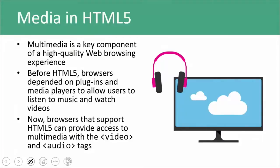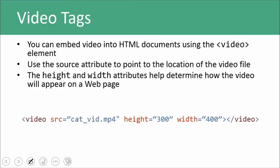Honestly, I'm the same way too. One thing that's really important to note about media and HTML5 is that prior to HTML5, browsers depended on plugins or media players in order to allow us to watch content on screen. But now we can actually embed video and audio onto a web page using the video and audio tags. You can embed video in a very simple way using the video tag. We point to the source — maybe a cat video — and define the height and width attributes to make sure the video renders properly on screen. Otherwise it just renders in its natural state. Note that we do use a closing tag for video.